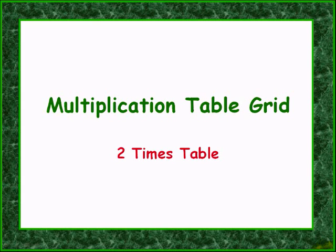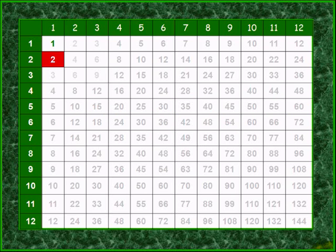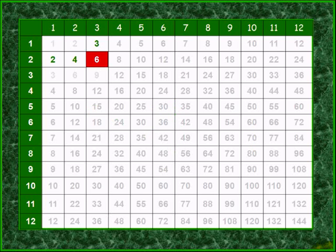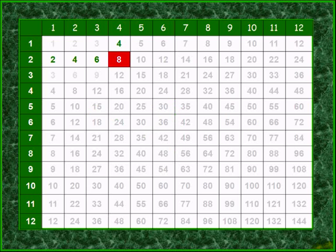I taught our two times table. Two times one is two. Adding two times two gives four. Adding two times three gives six. Adding two times four gives eight.